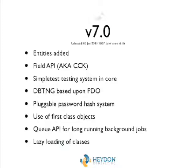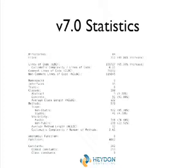This was a huge upgrade — a 65% increase in lines of code and a 50% increase in files. Some people even say that Drupal 7 is still slower than Drupal 6.